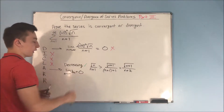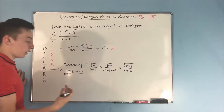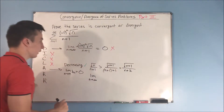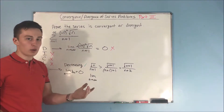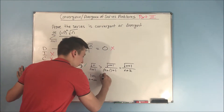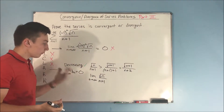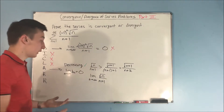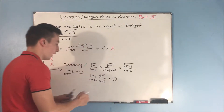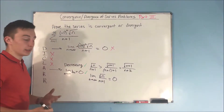Now we need to see if the limit as n approaches infinity of √n / (n+1) is zero. We've already kind of done this with the test for divergence — I already said just get rid of that negative one to the n. So we're basically doing the same thing again, and you can see that's going to be equal to zero. So that gets a check mark as well, and this series is convergent by the alternating series test.